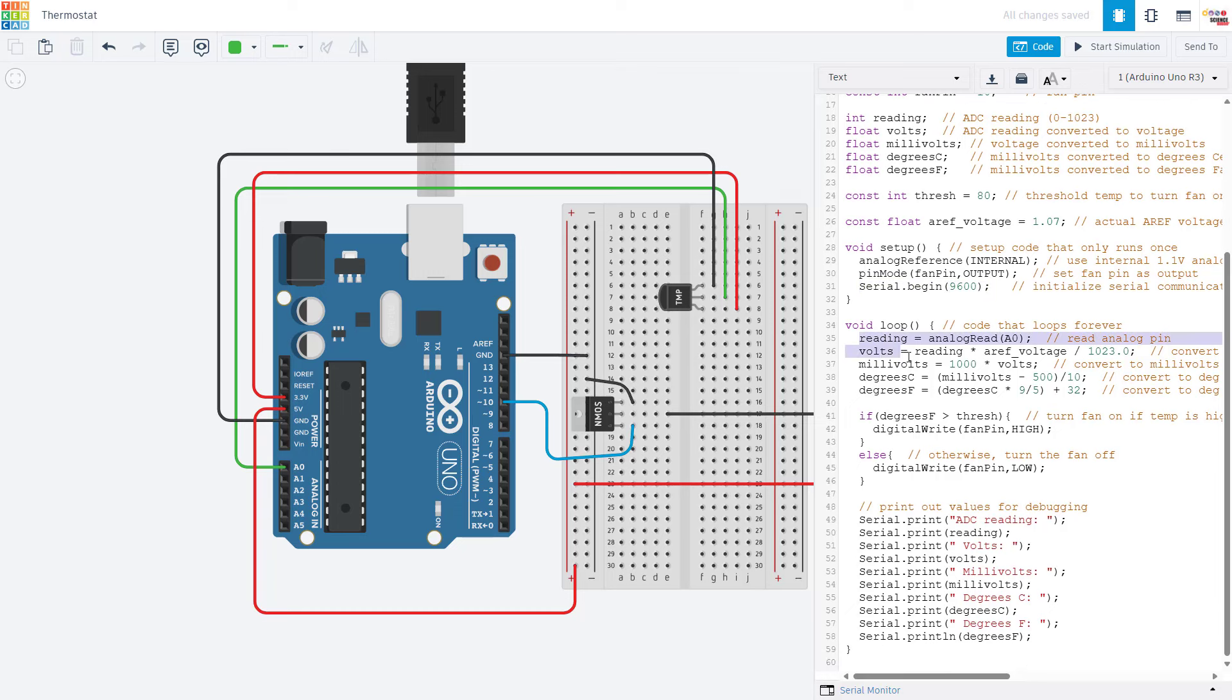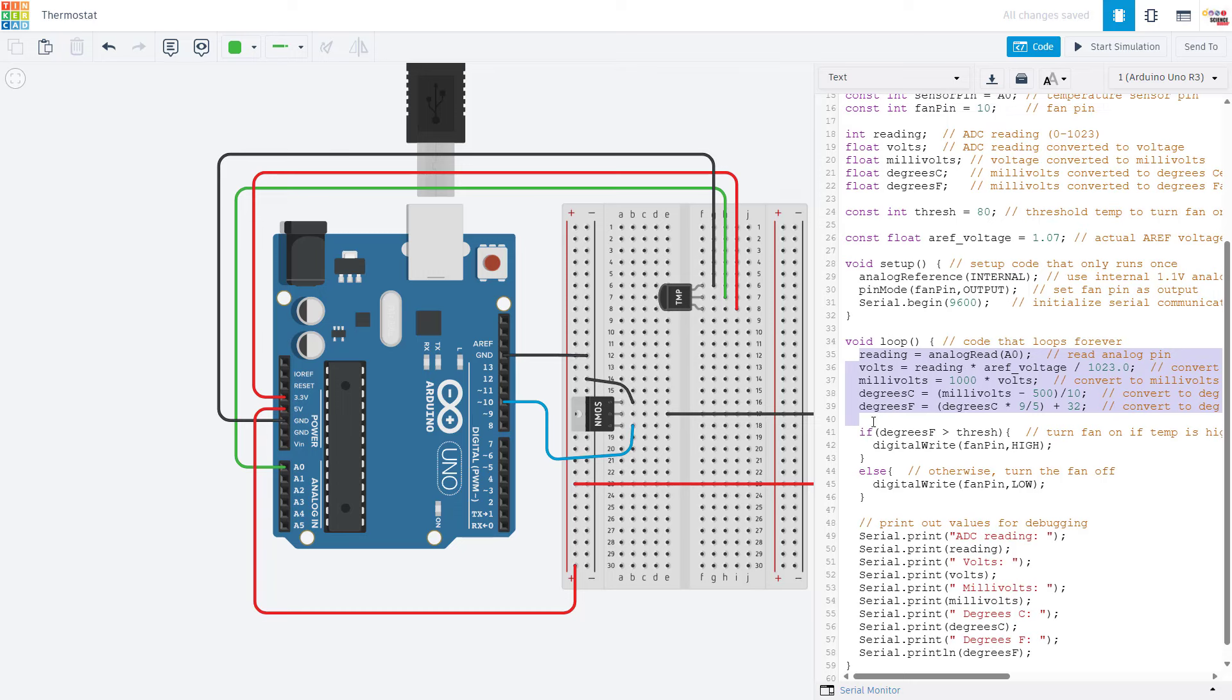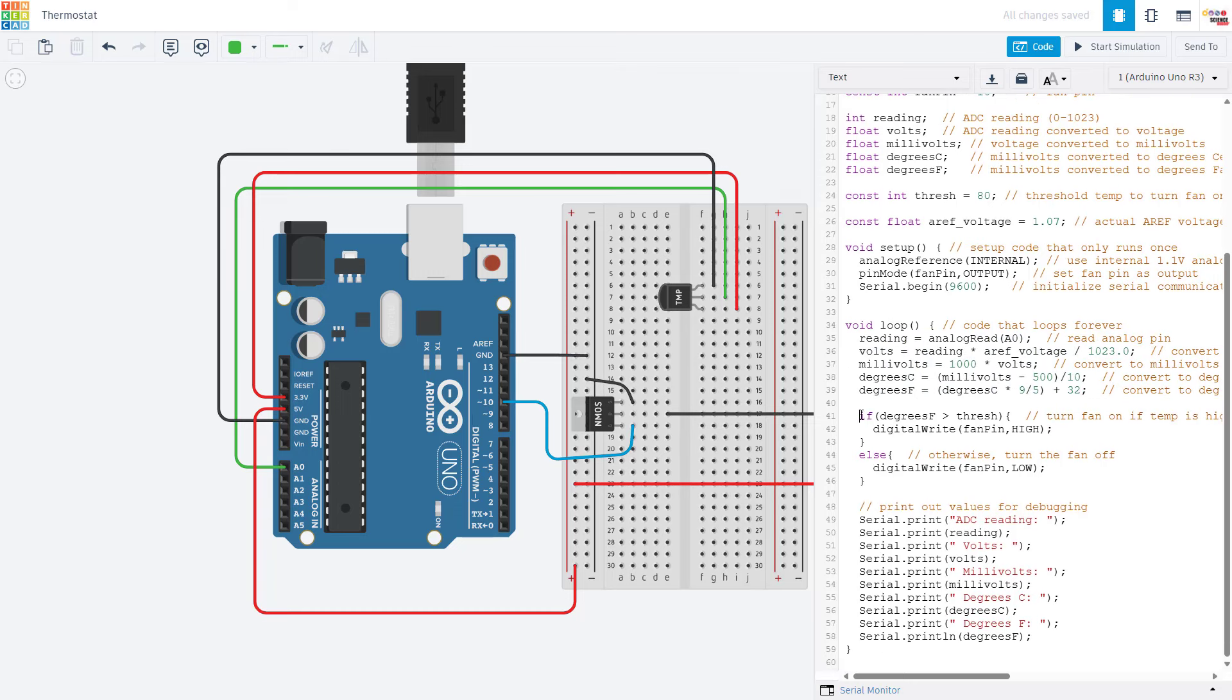In the loop function, we have code to read the temperature sensor and convert the readings to degrees Celsius and degrees Fahrenheit. I'm not going to go over all of that in detail in this video. You can go check out the temperature sensor tutorial if you would like to see where these equations come from. And then we have the key part of this program where we are really making it behave like a thermostat.